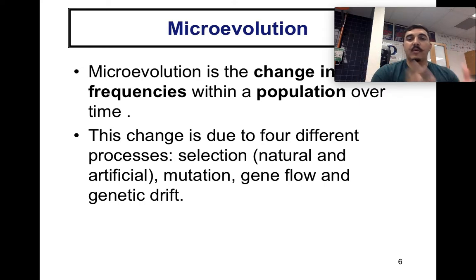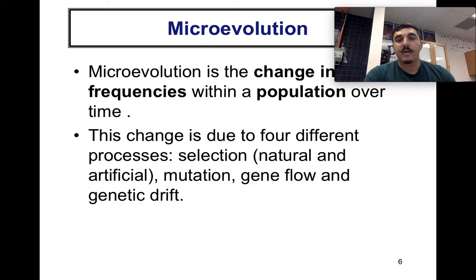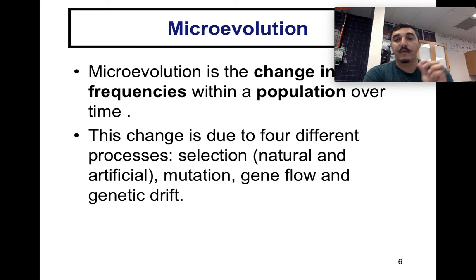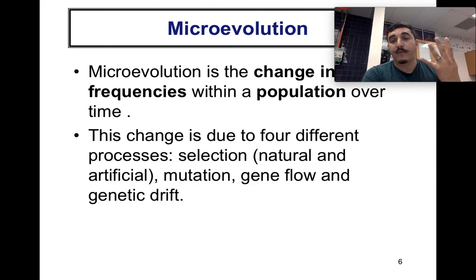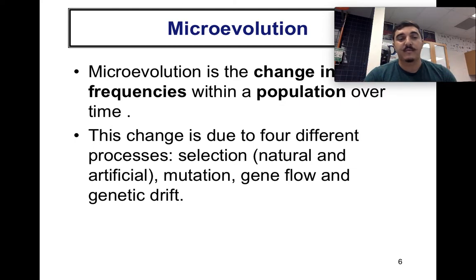Now we transition to microevolution — the change in allele frequencies within a population over time. We're less focused on naming species and more on what affects them. There are four main mechanisms through which these frequencies change: selection (natural or artificial), mutations, gene flow, and genetic drift. This is why we have such variety in characteristics across different species.